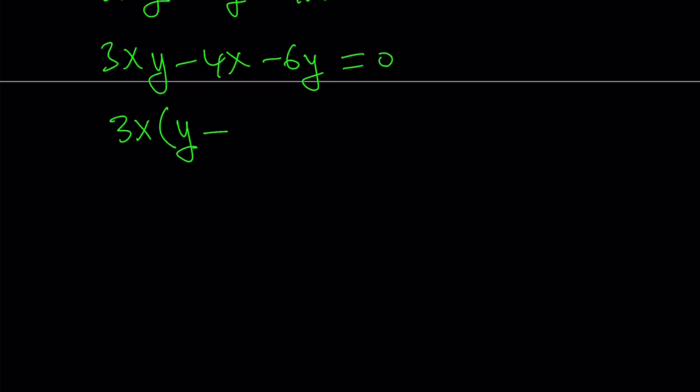You can take out 3x and then inside the parentheses you're going to get y minus. Now what should I multiply 3xy to get 4x? Yes, the answer is 4 thirds.